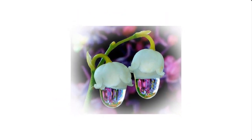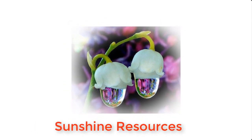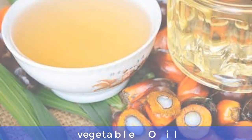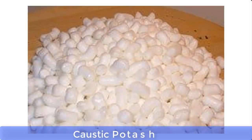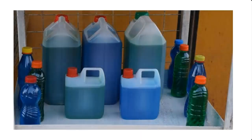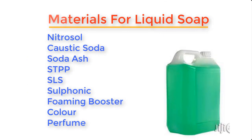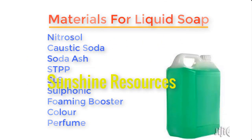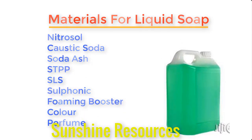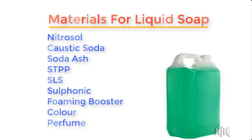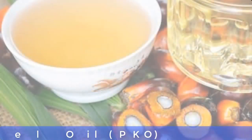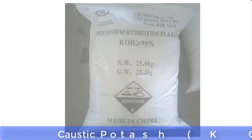Hello and welcome, my name is Sunshine, the project manager at Sunshine Resources. In this video I'm going to show you how to make liquid soap with just two materials, and these are vegetable oil and caustic potash. In our previous videos we have produced liquid soap using about eight or nine items such as nitrosol, caustic soda, soda ash, SDPP, SLS, sulfonic acid, foaming booster, color, and perfume. But in this particular video we will be producing liquid soap with just two major materials: any kind of vegetable oil and caustic potash.